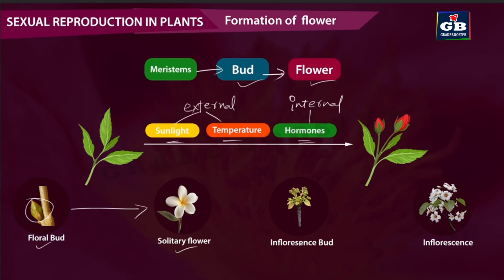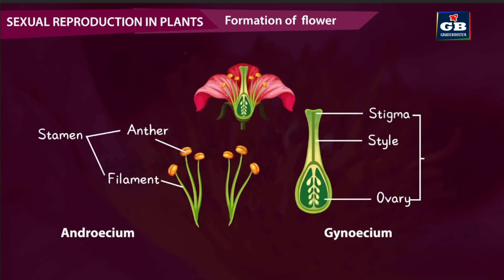Whereas if the stem produces an inflorescence bud — a cluster of buds, a group of buds — then these inflorescence buds grow into an inflorescence. Inflorescence means a bunch of flowers. Now let us look at the reproductive parts of the flower. Bisexual flowers contain both male and female reproductive parts.